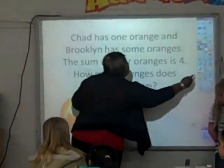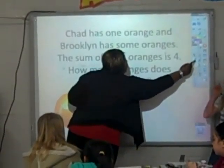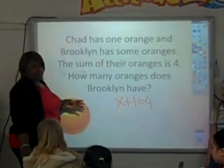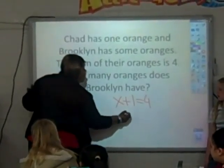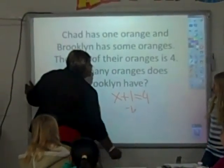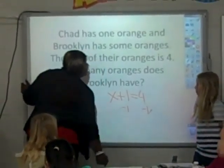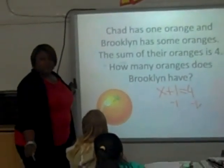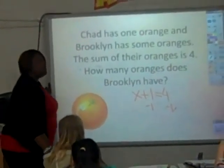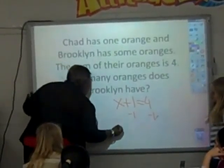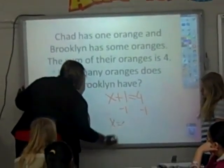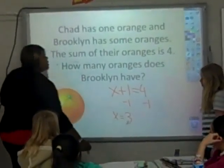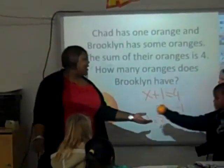With this equal sign, whatever I do to one side of the equation, I need to do to the other side of the equation. So if I'm going to take one away from this side of the equation, I have to take away one from this side of the equation. It keeps it even. So if I take one away from this side, I'm left with X equals — what's four minus one? Three. So how many oranges does Brooklyn have? Three. Thank you, Chad.